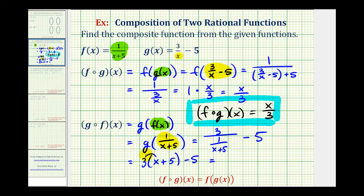So now we'll distribute. This would be three x plus fifteen minus five, which is equal to three x plus ten. So g of f of x is equal to three x plus ten.